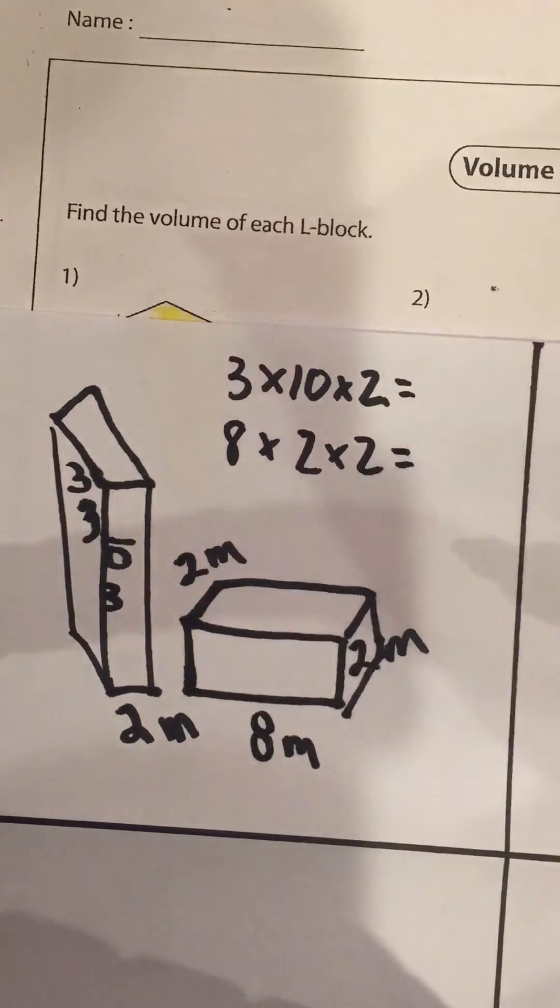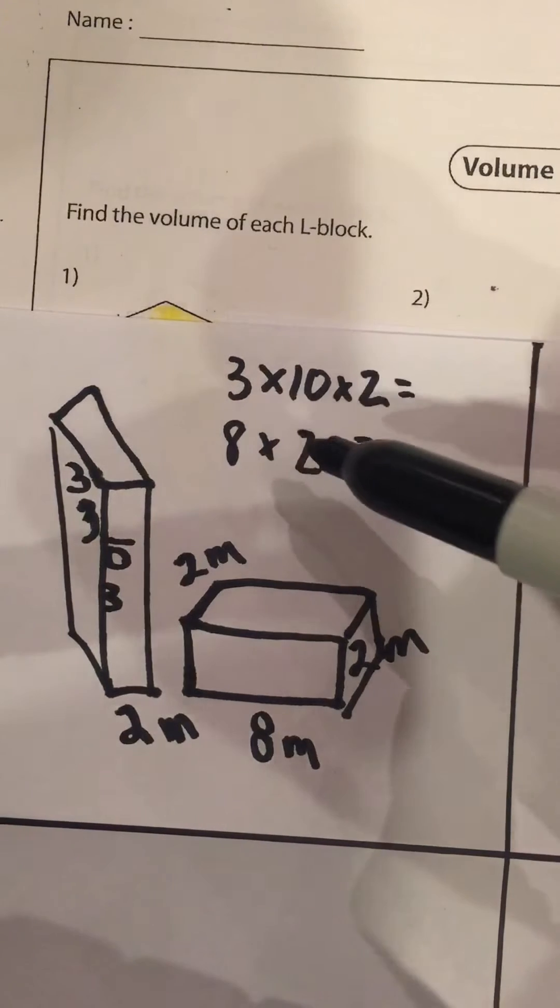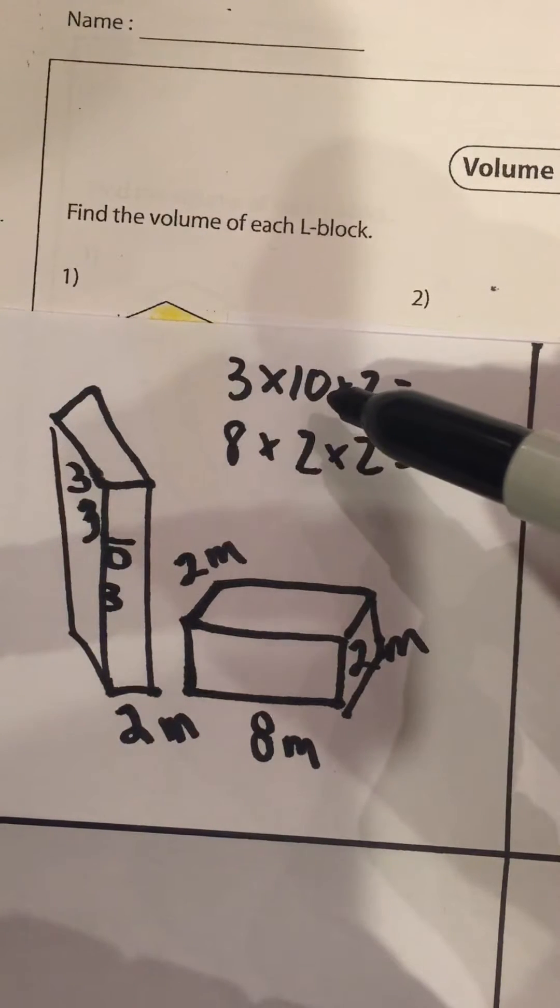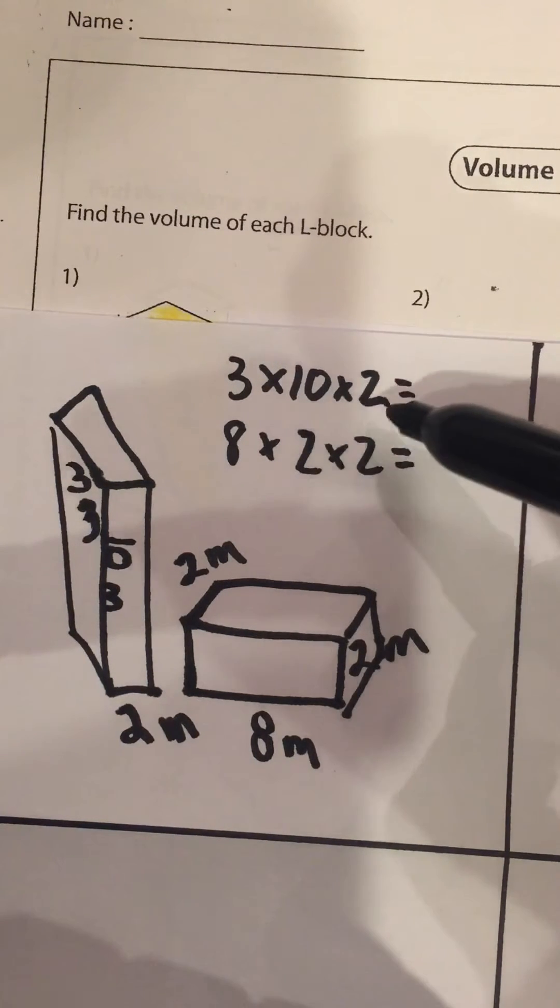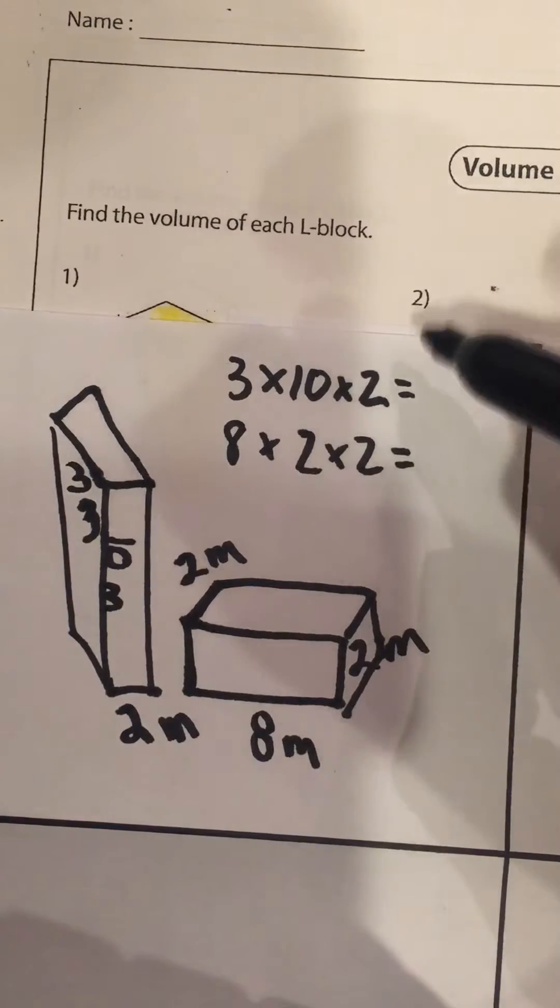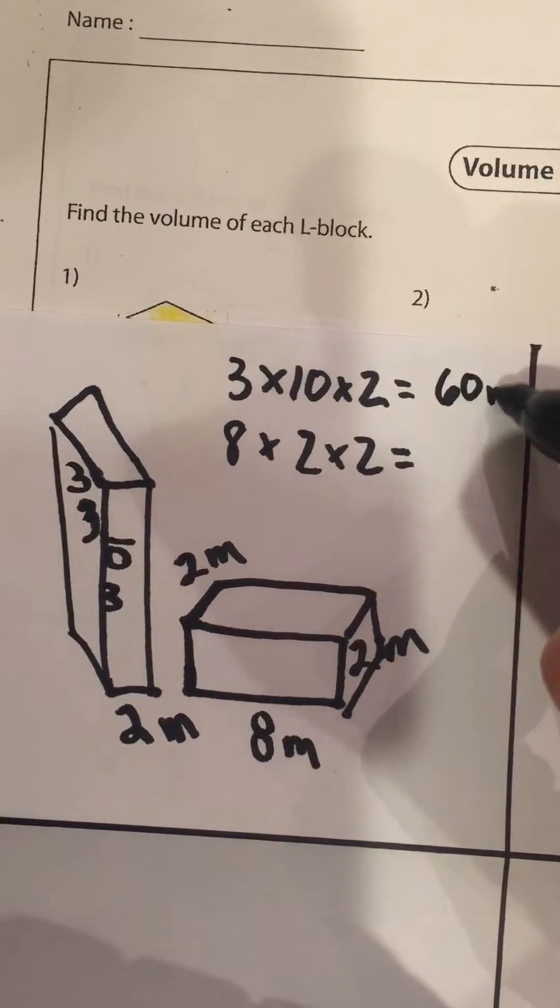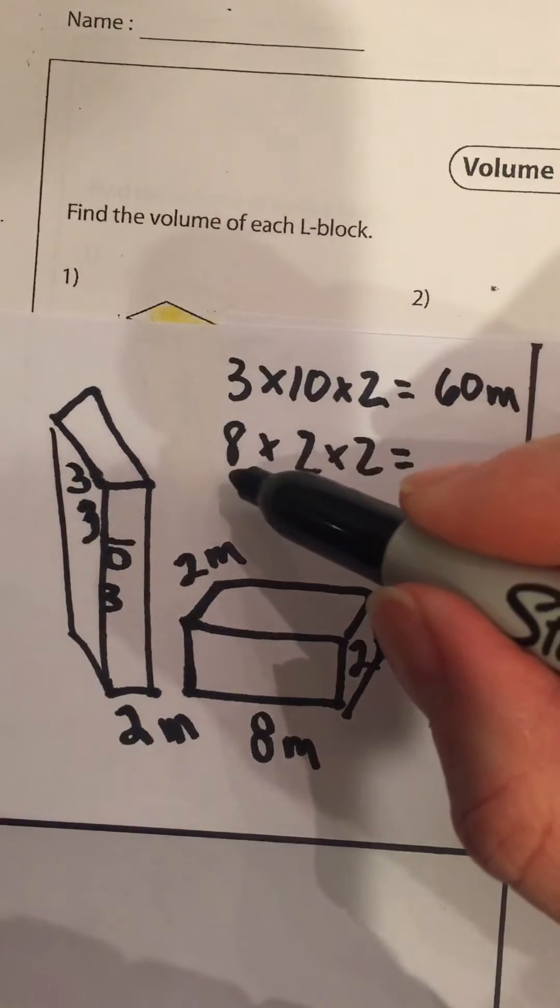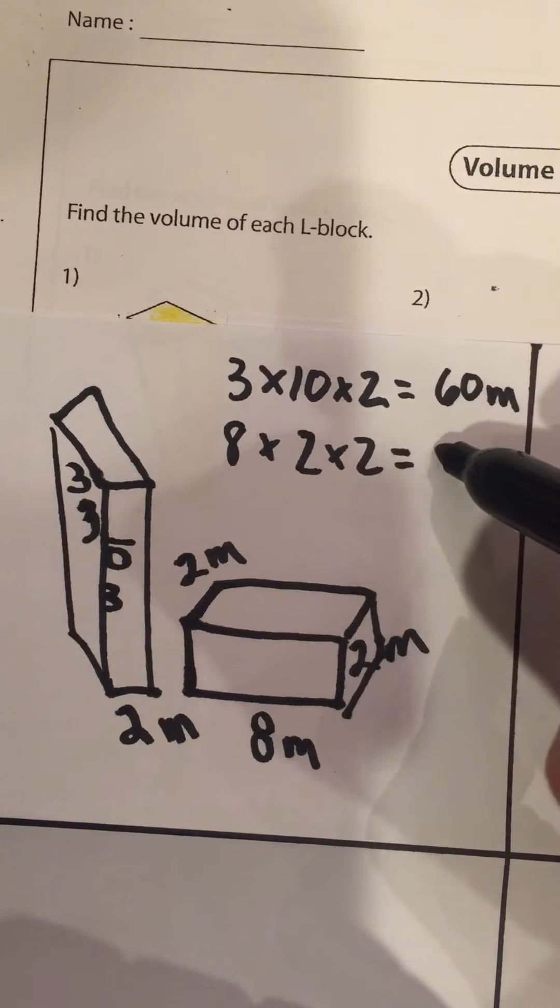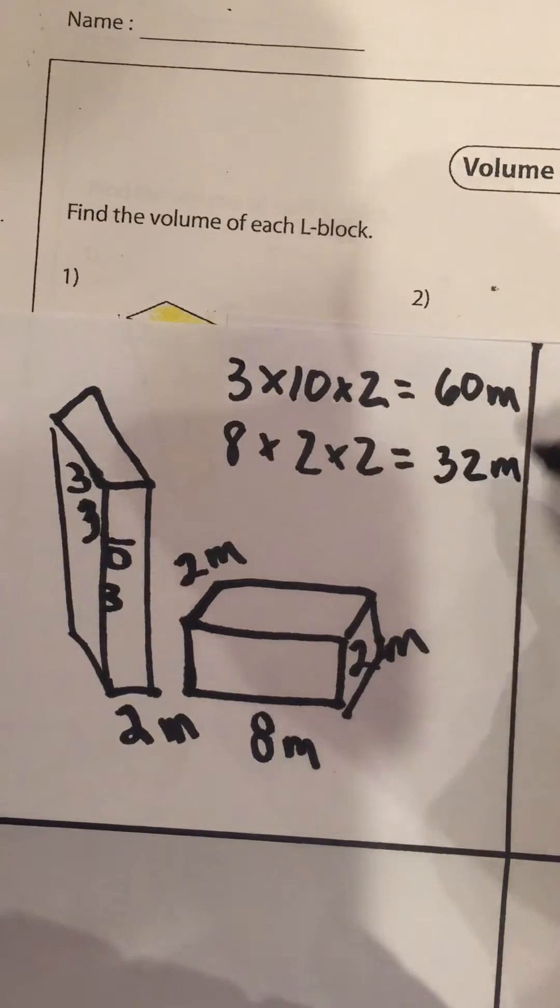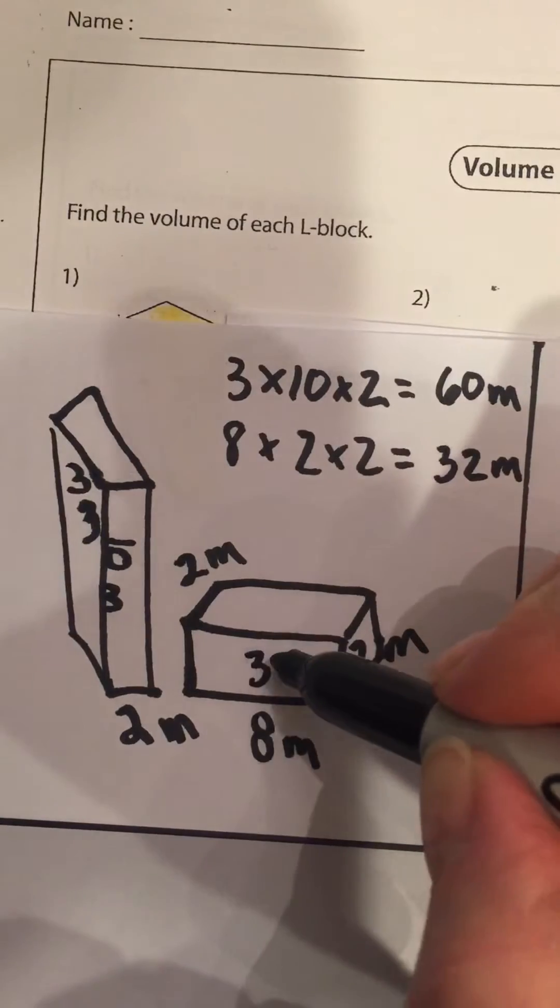Pretty sure we can do all of this math in our head, mental math. Three times ten is 30, times two is 60 meters, and then we have eight by two is 16, times two is 32 meters.